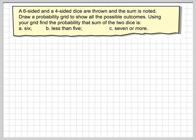So we have to draw a probability grid, sometimes known as a possibility space diagram. I'm going to start with the first die, which is the six-sided one. It's numbered one, two, three, four, five, six. And then the second die labeled one, two, three, four. So you've got four sides.